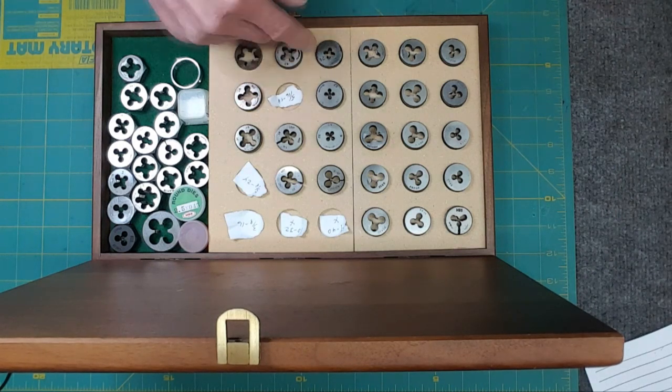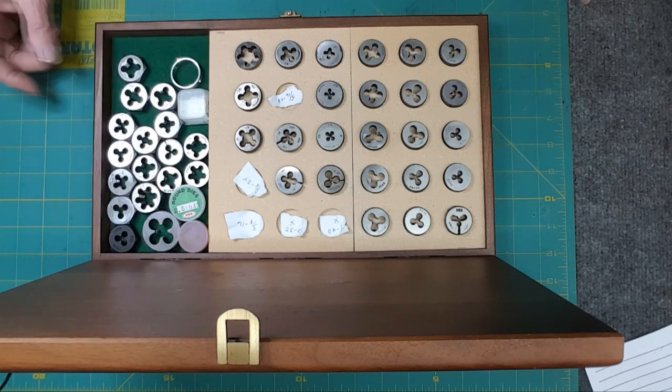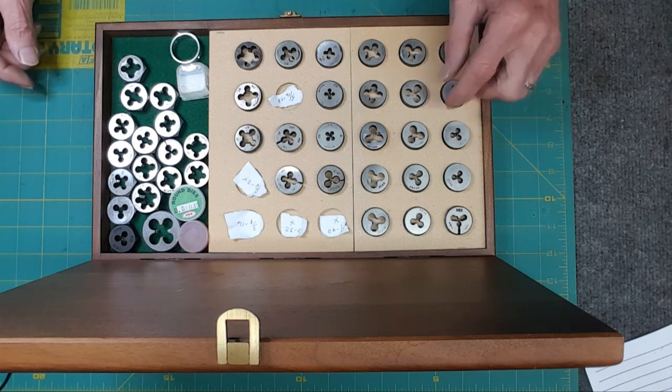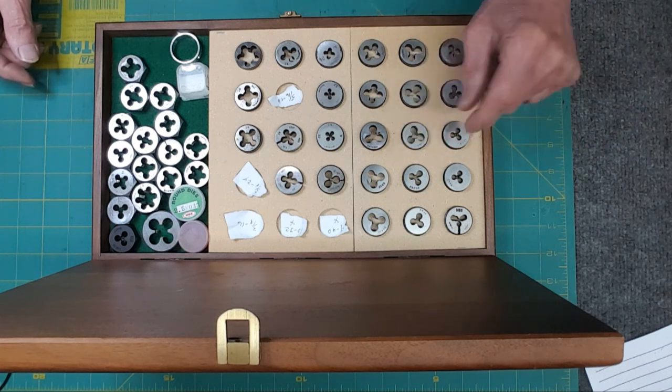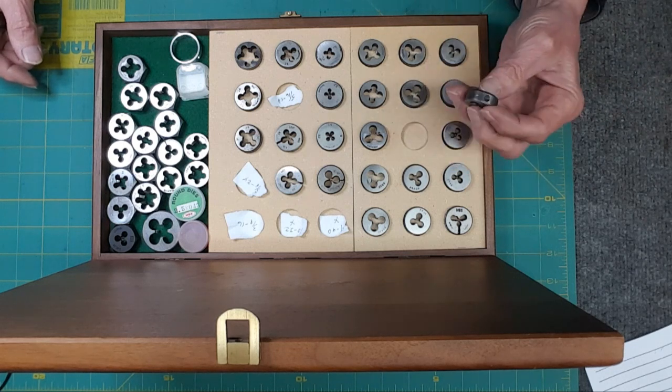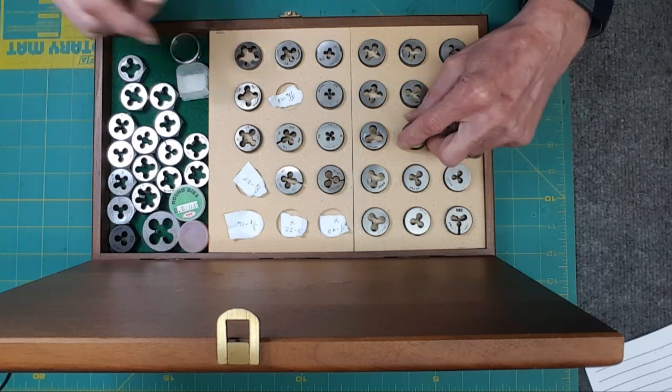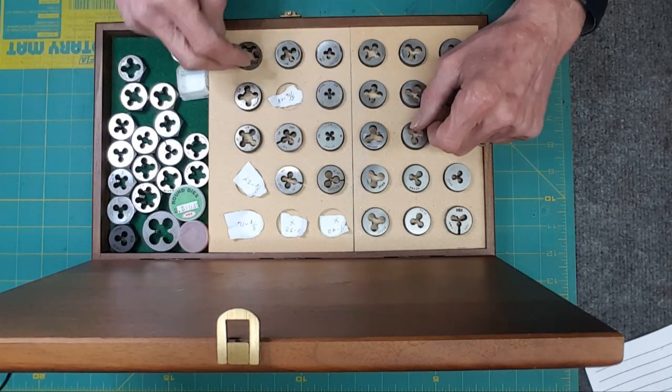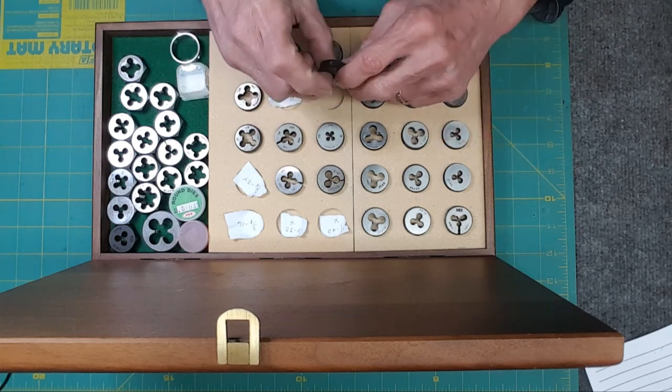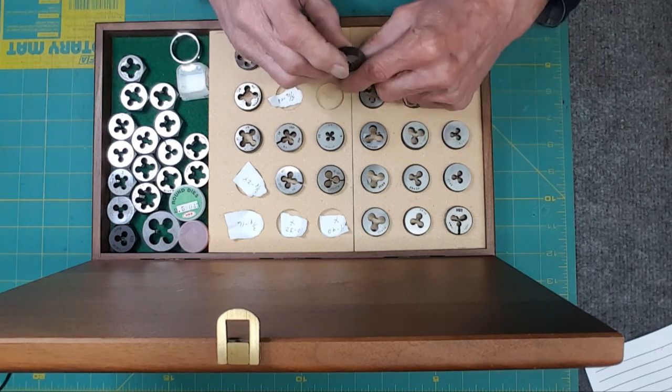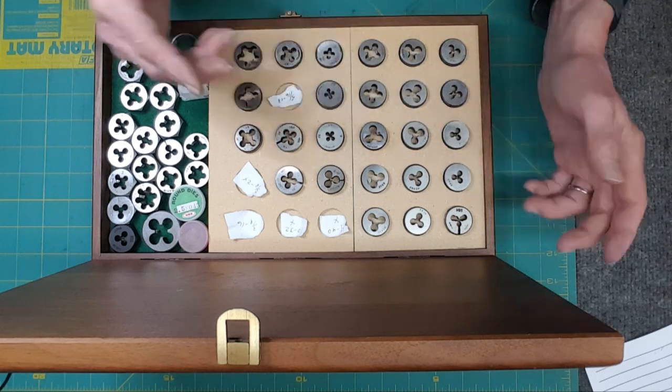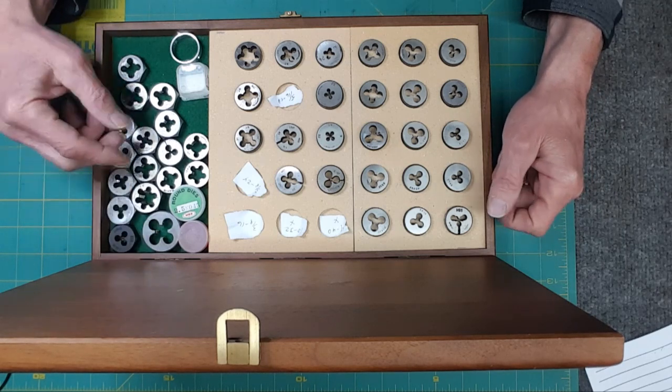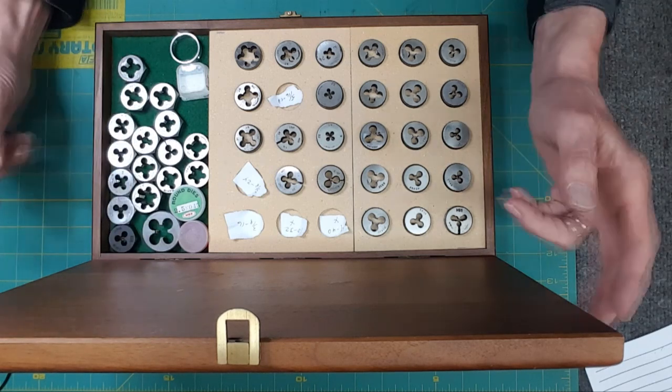So these are true threading dies. And you can tell the handle. Usually when you see a threading handle, it's got two screws for two dents in these things. These only have one. It must be very old or something. So threading dies. And I go up to pretty big. That's a metric one.